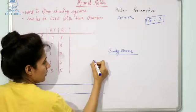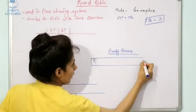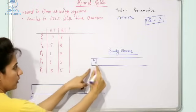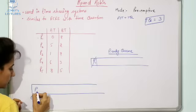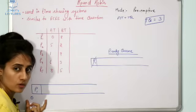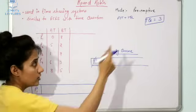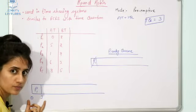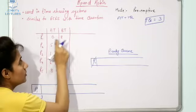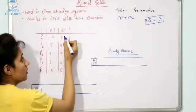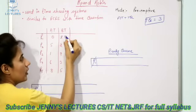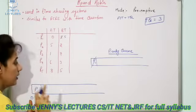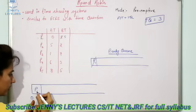At time zero, P1 has arrived in the ready queue. We remove P1 from the ready queue and allocate the CPU to it. The time quantum is three units of time, so we allocate the CPU to P1 for three units of time only. The total burst time of P1 is five units, so after three units, P1 is removed from the CPU — it still needs two more units to complete.